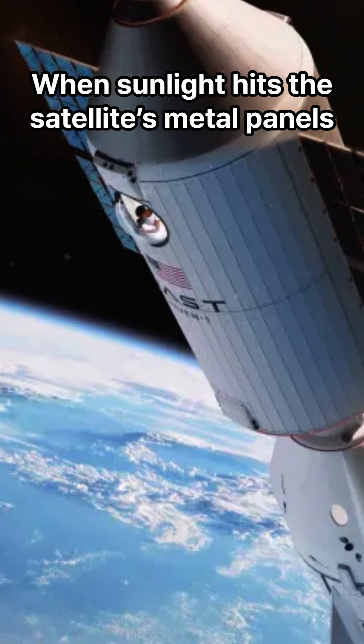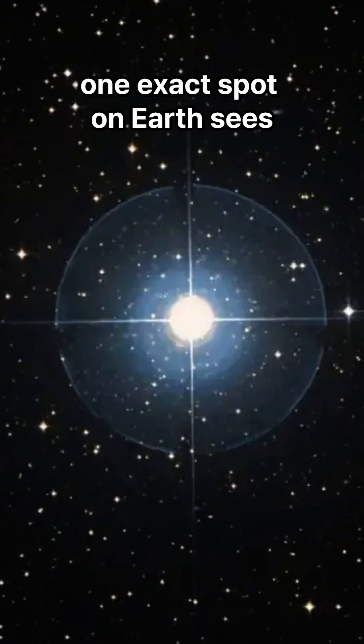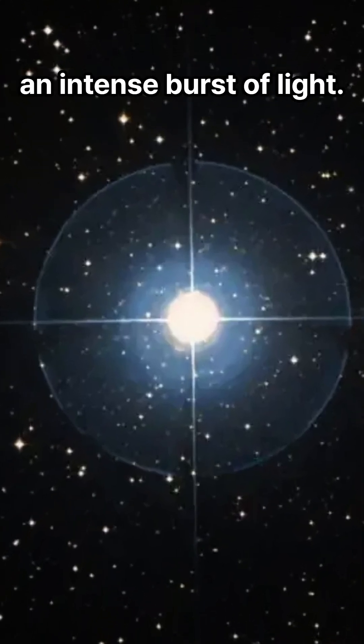When sunlight hits the satellite's metal panels at the perfect angle, one exact spot on Earth sees an intense burst of light.